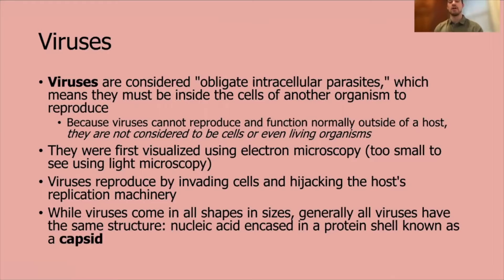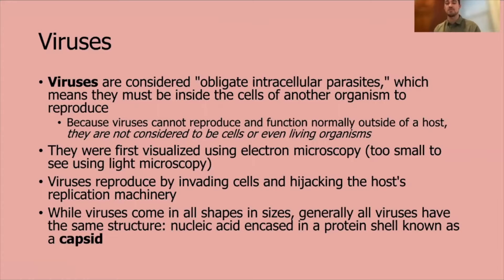Whenever you hear people talking about vaccines, they'll say it's just a dead virus — but that's technically not correct because viruses aren't alive. You can't really kill a virus because they're not a living thing. The proper term to use would be 'attenuated,' which means it's a weakened strain, or they'll remove the replication machinery, weakening the virus to the point where it's not able to reproduce. Those are the types of viruses used in certain types of vaccines. But they are not considered cells and they're not considered living organisms.